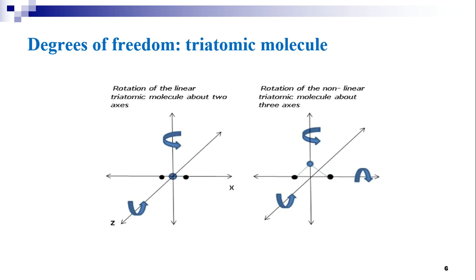Now let us look into the degrees of freedom of a triatomic molecule. The possible motions of a triatomic molecule are shown in the figure, including translational and rotational motion. Triatomic molecules are of two categories: linear molecules and nonlinear molecules. The figure shows the rotation of a linear triatomic molecule about two axes, and the rotation of a nonlinear triatomic molecule about three axes.